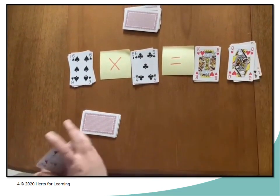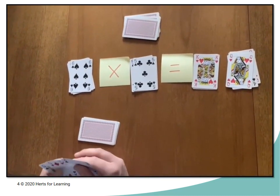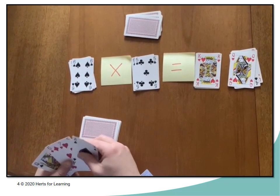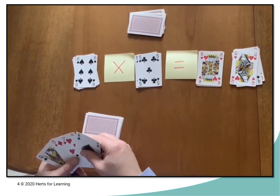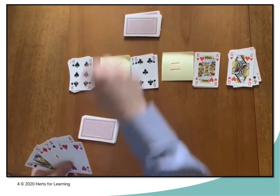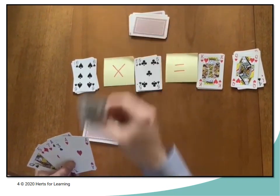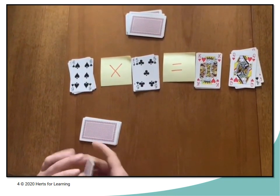This time we've got 6 lots of 5 is equal to 30 and the king there is being used to represent the 3 in the tens place. So the wild card can be any digit from 1 to 9, and on the next go you can change the value of the wild card.